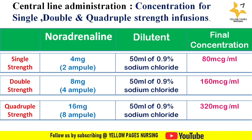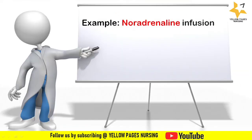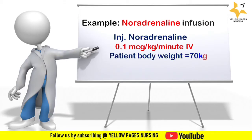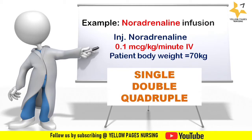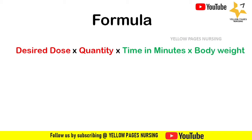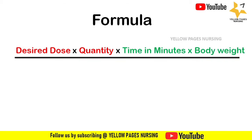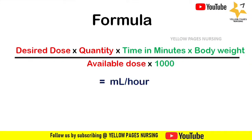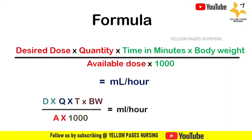Now let's do noradrenaline infusion calculations using single, double, and quadruple strength. The formula is: desired dose × quantity × time in minutes × body weight ÷ (available dose × 1000), which gives ml per hour. In short: D × Q × T × BW ÷ (A × 1000) = ml/hr.